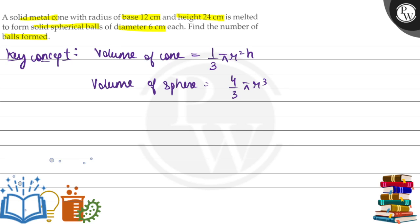Let's use the formula. What is given in the question? In the question, the cone's radius, small r, is given as 12 cm and height is given as 24 cm, and the sphere's radius is 6/2, which is 3 cm.